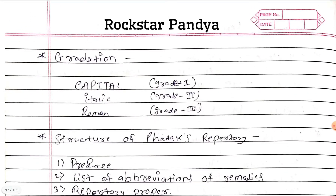Gradations: there are three gradations. Capital is Grade 1, Italics is Grade 2, and Roman is Grade 3. Capital carries three marks.